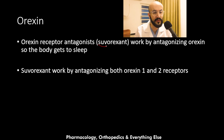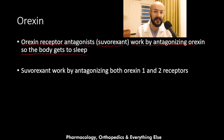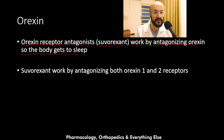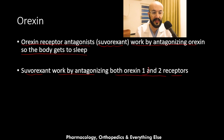Suvorexant is an orexin receptor antagonist, so it works by antagonizing orexin to allow the body to sleep. The idea of Suvorexant is to manipulate the orexin system — antagonizing it to make the body go to sleep. Suvorexant works by antagonizing both orexin peptide receptors, orexin 1 and orexin 2, blocking both.